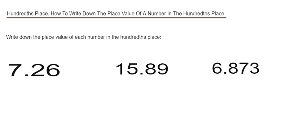Let's have a look at the first example. Our first one is 7.26. If we count two places from the decimal point, we've got two in the tenths and then six in the hundredths place. We can write the place value of the six as six hundredths, which can also be written as a decimal as 0.06.